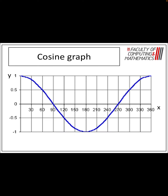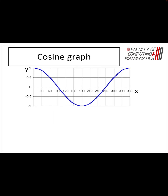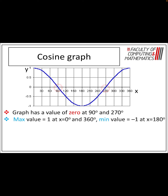The cosine wave and sine wave are very, very similar — they're only 90 degrees apart. So let's have a look at some of the defining features of the cosine wave. This one has zeros at 90 and 270, so it crosses the x-axis at 90 and 270 degrees. Its maximum value is 1, and that occurs at 0 and 360 degrees, and its minimum value is negative 1, and that happens at 180 degrees.